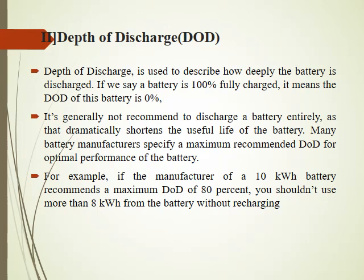For example, if I have a 10 kilowatt hour battery and the manufacturer specifies a depth of discharge of 80%, it means that 80% of 10 kilowatt hours — that is 8 kilowatt hours — should be utilized, and then the battery should be kept for recharging. This is very important because if we utilize the battery to its full capacity, the battery life reduces drastically. The depth of discharge is specified by the manufacturer depending upon the battery type.